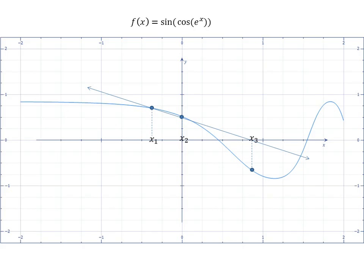Using x2 and x3, we can then draw another secant line. Notice that this one also intersects the x-axis, which gives us our point x4.